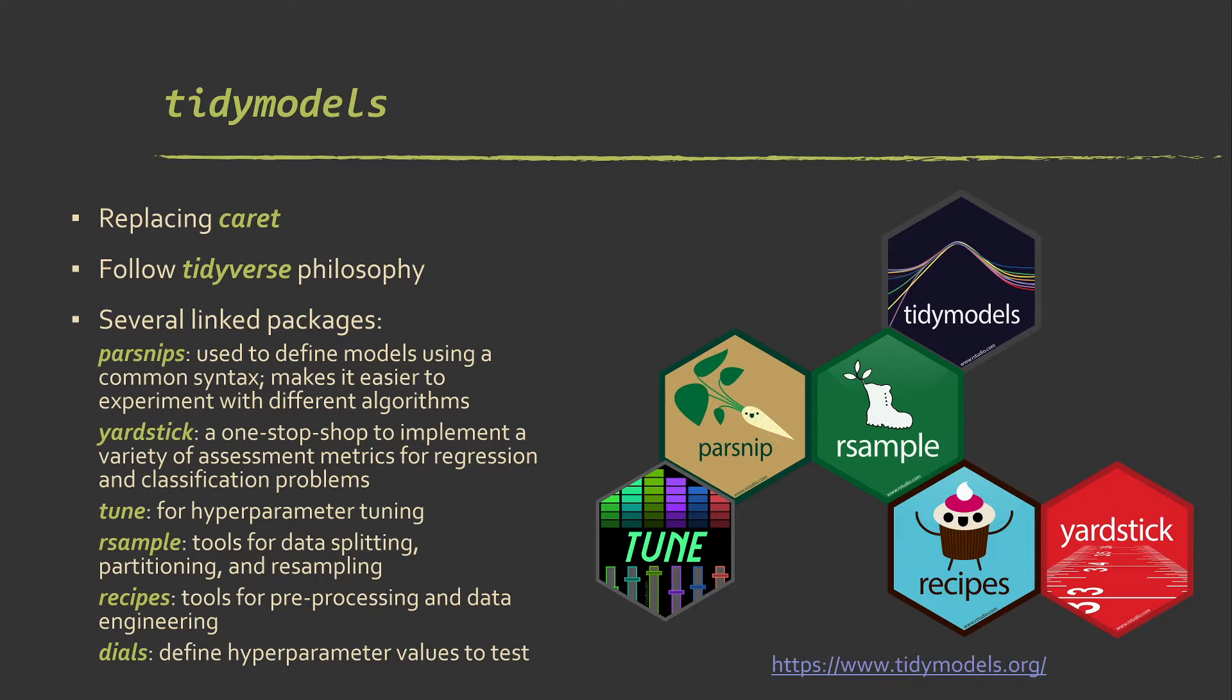So we have Parsnips, which is used for defining models and experimenting with different models for different problems. Yardstick, which I've mentioned several times in the prior videos, that's the kind of go-to one-stop shop for all of your assessment metrics for regression classification.